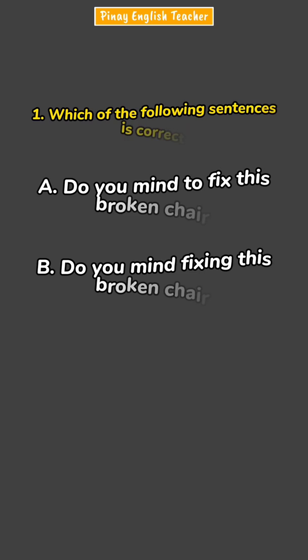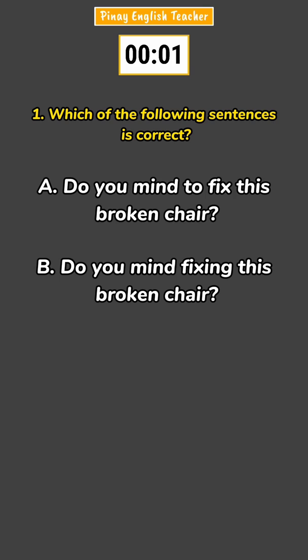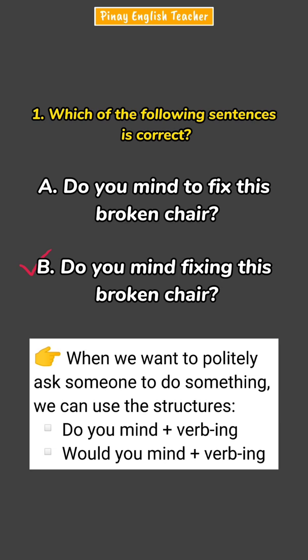Now let's do an activity. Which of the following sentences is correct? Letter A: 'Do you mind to fix this broken chair?' Letter B: 'Do you mind fixing this broken chair?' The correct answer is letter B — 'Do you mind fixing this broken chair?' Remember, when we want to politely ask someone to do something, we can use 'Do you mind' plus the ING form of the verb, or 'Would you mind' plus the ING form of the verb.